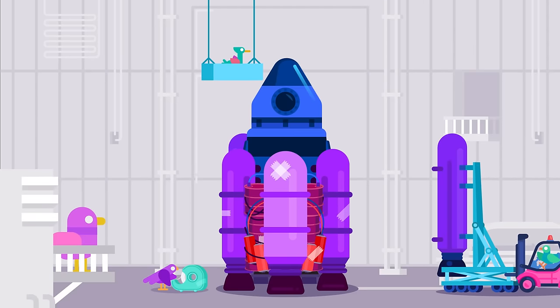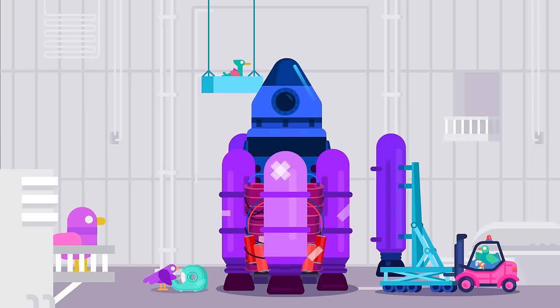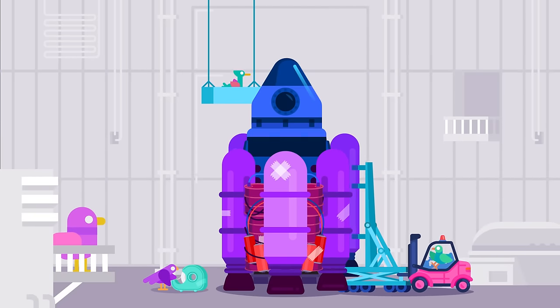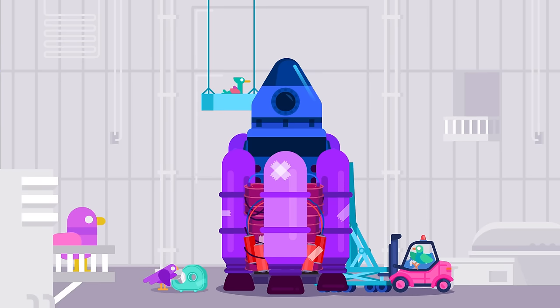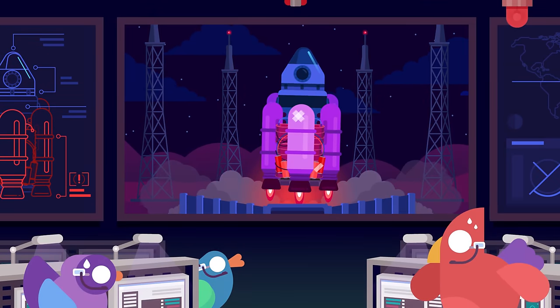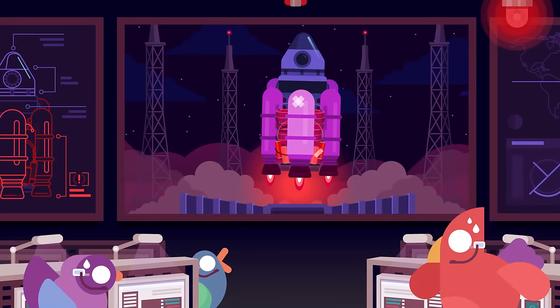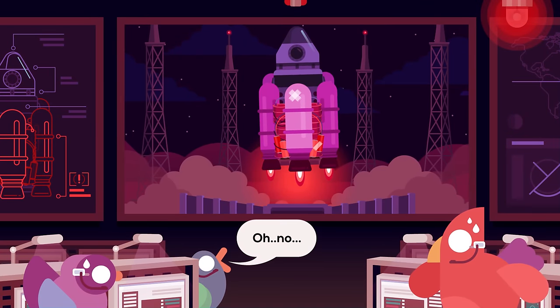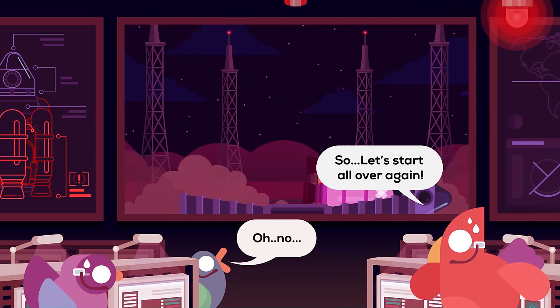But a rocket can only produce so much thrust. So there's a maximum weight, after which it just won't take off. If you add too much weight, it won't lift off. So you can't just build bigger and bigger fuel tanks. This is the tyranny of the rocket equation, and it means space flight will never become easy.